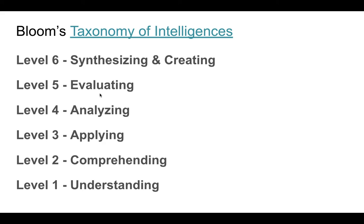Level five is evaluating. As we move up the ladder, these thinking processes begin to get more difficult. Level six is synthesizing and creating — this is where you don't just understand it or understand its parts. You can use it for something, you're comparing it, you're evaluating it, and then you ask: can you create something completely new? Can you take the old knowledge and marry it with something you're thinking to synthesize and create?